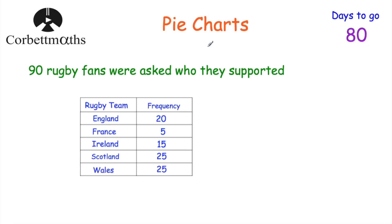In today's video we're going to look at pie charts — how to draw them and how to answer questions based on pie charts that are drawn for us. Here we've got a table: 90 rugby fans were asked who they supported, with teams England, France, Ireland, Scotland and Wales, and frequencies 20, 5, 15, 25 and 25. So 25 people supported Wales, 15 supported Ireland, and all together that adds up to 90.